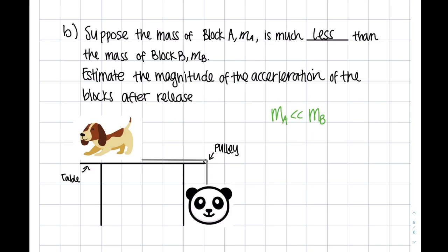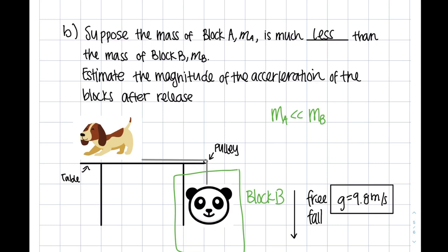Since block A, or the puppy, has a super small mass, we can say that it's pretty close to zero. Therefore, block B, or the panda, is almost like free falling. And as we know, hopefully, the acceleration of an object in free fall is 9.8 meters per second, which is gravity. So this is actually the magnitude of our acceleration. We will also prove this a little later.